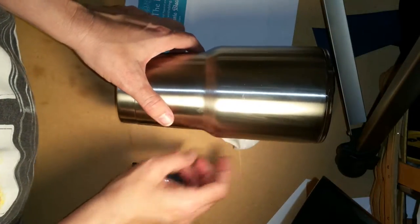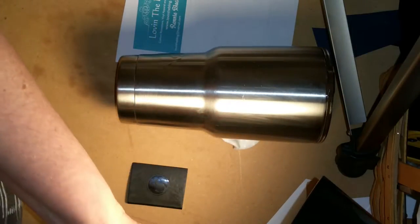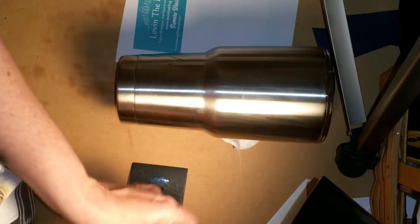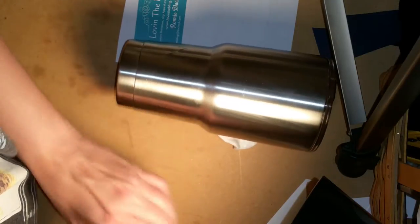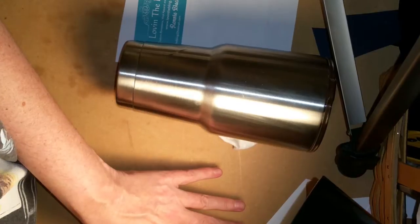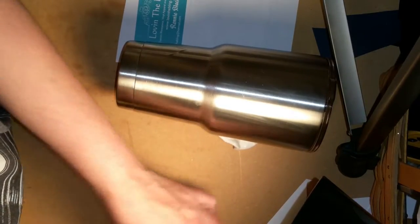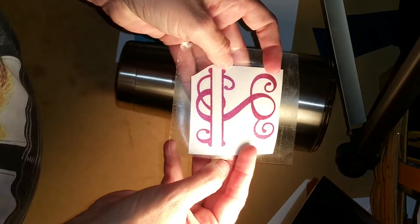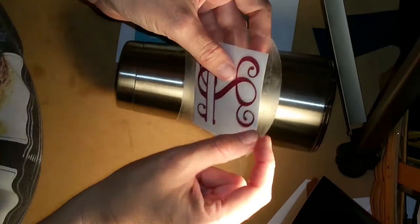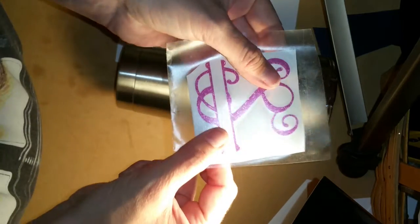While that's drying I will put our paper on the decal. When you get your decal it's going to look like this. The transfer paper is on the top, hard paper is on the bottom, your decal is inside of course.